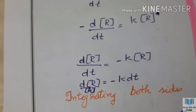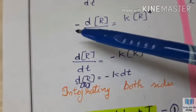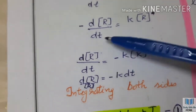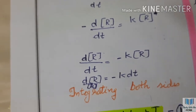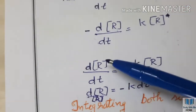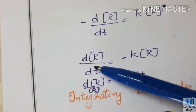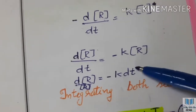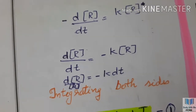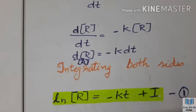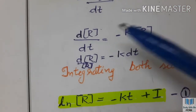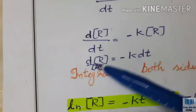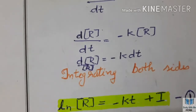This is minus d[R]/dt equals k times concentration of R. That means negative d[R]/dt equals minus k times concentration of R. In the next step, I'll show you the rearrangement.